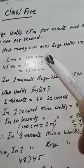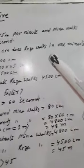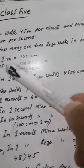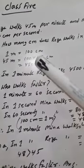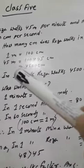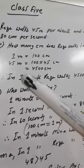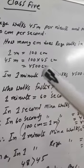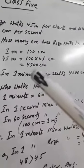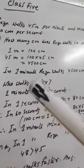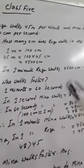How many centimeters does Raja work in 1 minute? Since 1 meter equals 100 centimeters, 45 meters equals 100 multiplied by 45, which is 4500 centimeters. So in 1 minute, Raja works 4500 centimeters.